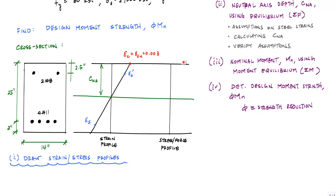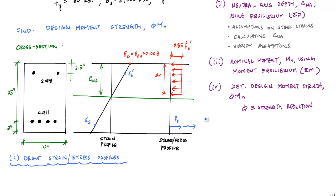Then I draw the stress and force profile using the Whitney stress block. The compression stress block has a depth A and a stress of 0.85 FC prime. I convert stresses to forces: the tensile force resultant in the tensile reinforcement is Ts, the force resultant in the compression steel is Cs prime, and the resultant of the equivalent stress block in concrete is Cc.